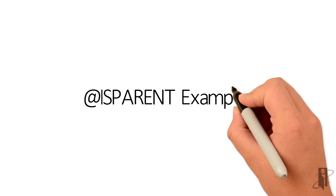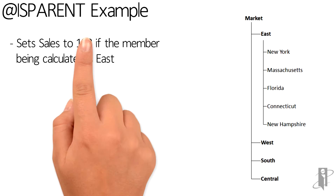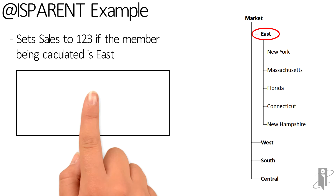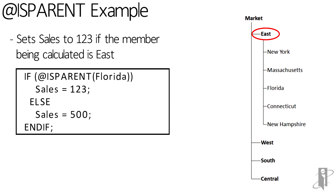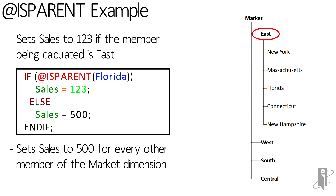So let's say we wanted to determine if we were on the parent of Florida. For whatever reason we don't want to hard code East, so we want to say if it's a parent of Florida, which is only one member — East — we're going to set sales equal to 123, otherwise sales are equal to 500.